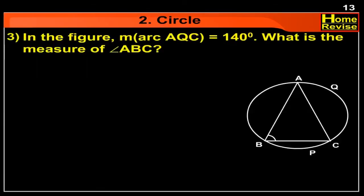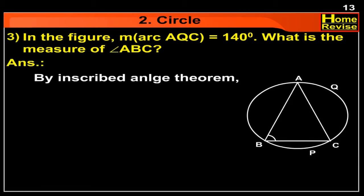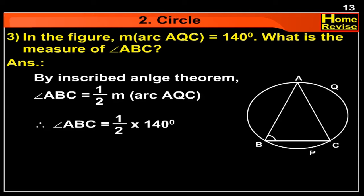In the figure, measure of arc AQC is 140 degrees. What is the measure of angle ABC? Answer: By the inscribed angle theorem, angle ABC is equal to half the measure of arc AQC. Therefore, angle ABC is equal to half of 140 degrees, so angle ABC is 70 degrees.